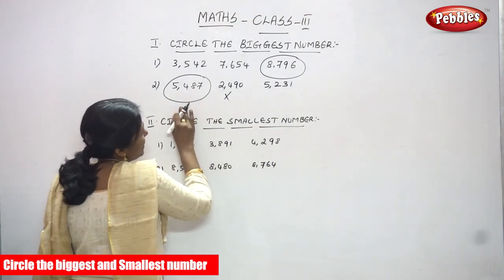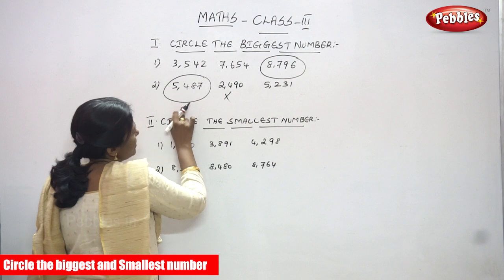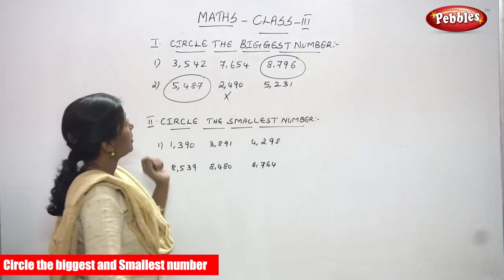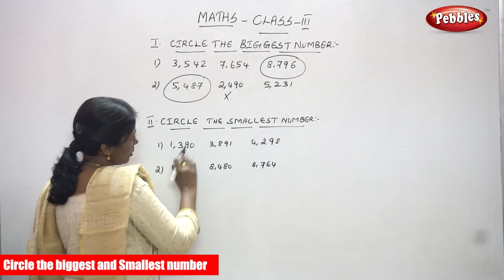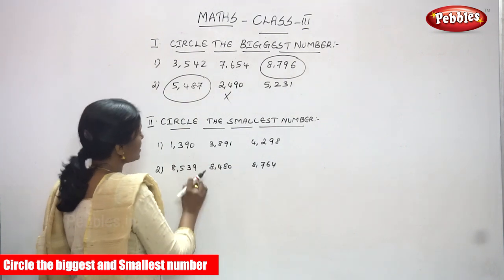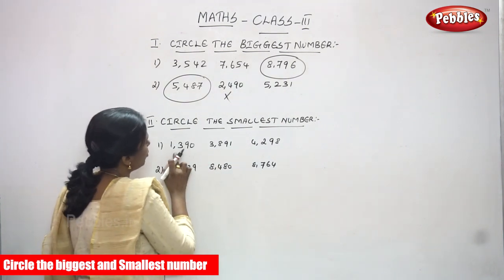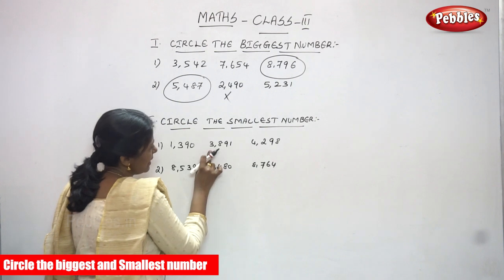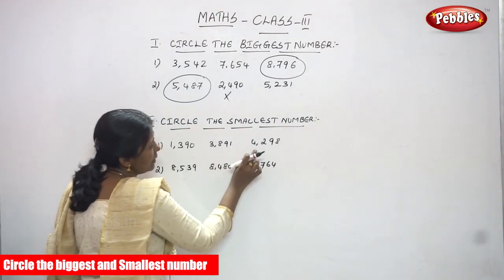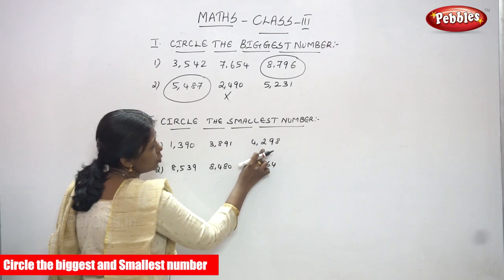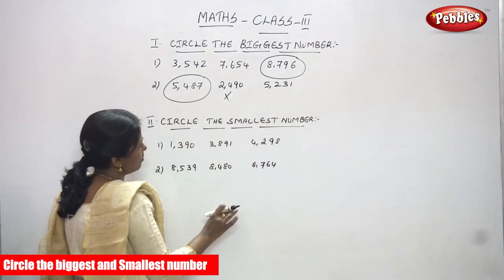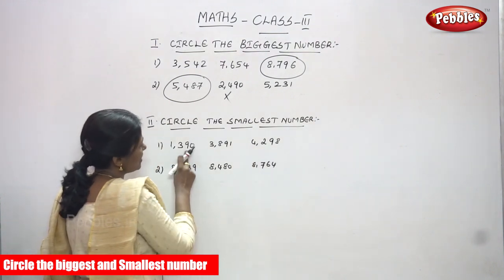5487 is the biggest number, so I circle it. Now we are going to circle the smallest number. Look at this series: the first number is 1390, the second number is 3891, and the third number is 4298. All are four-digit numbers.